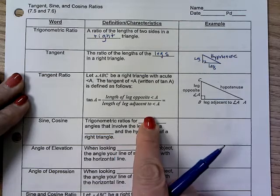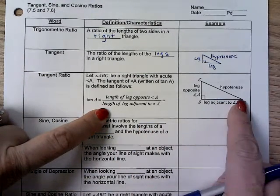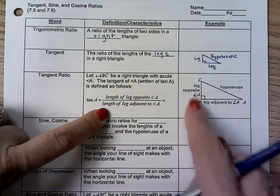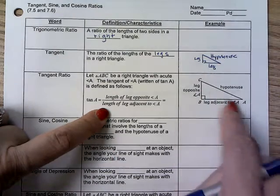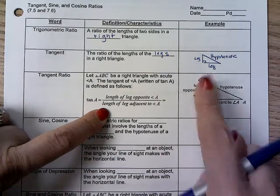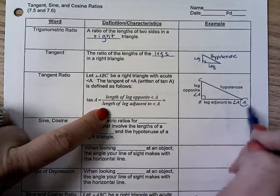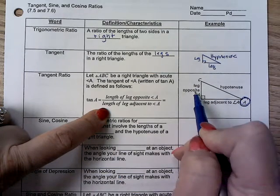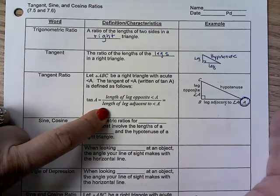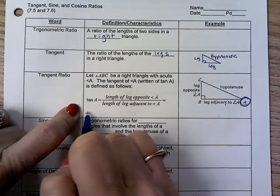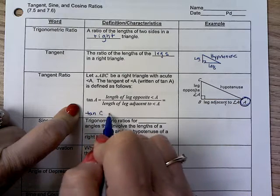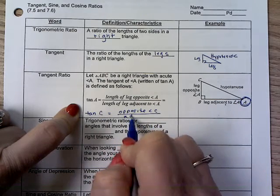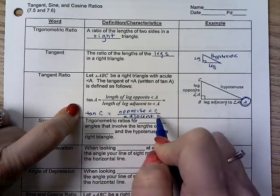The tangent ratio comes from the two acute angles in the triangle. It can never be used with the right angle — you'll never use the right angle at all. You're always going to use either acute angle; it can be angle A or angle C. When you're looking at angle A, the tangent is derived from the opposite leg over the adjacent leg. Similarly, the tangent of C would be the opposite leg of angle C over the adjacent leg of angle C.